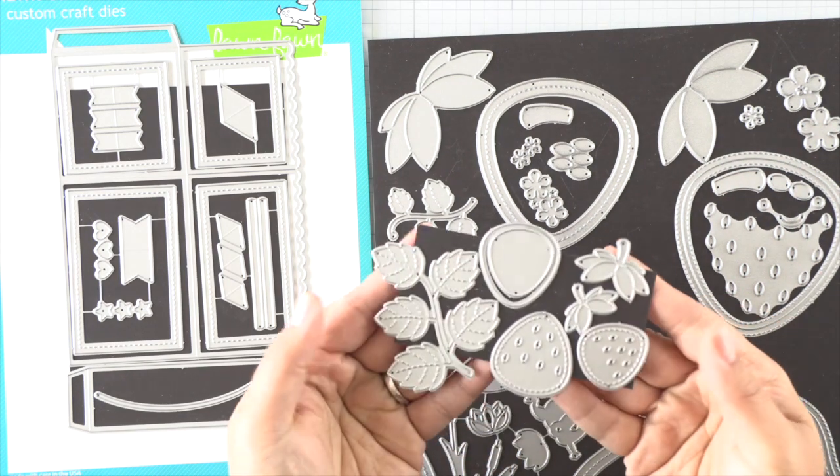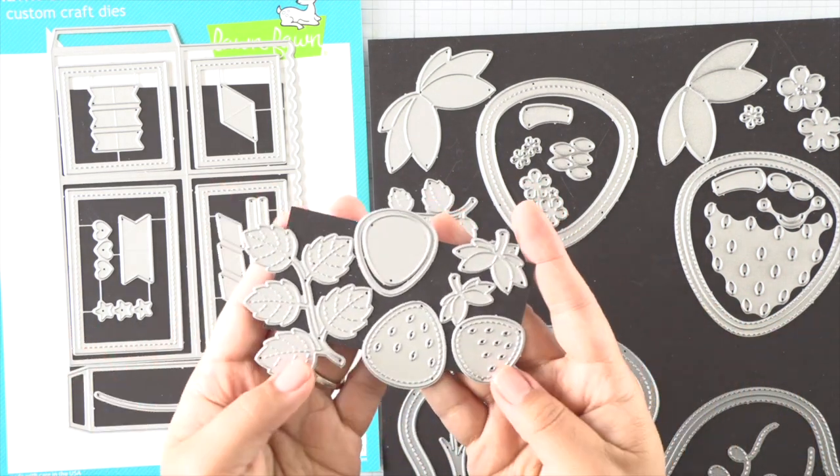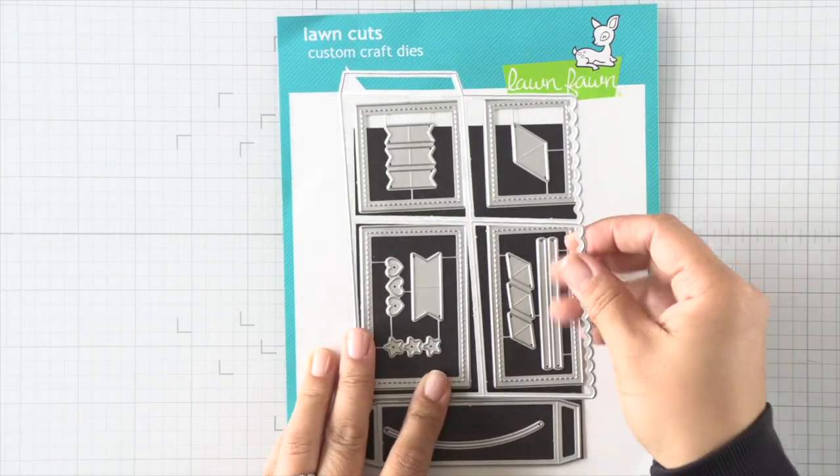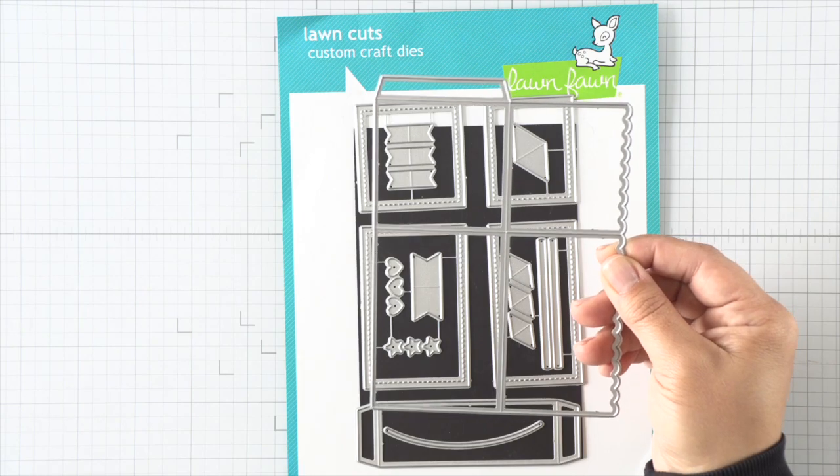I'll be using some foliage and flowers from the Outside In Stitched Strawberry as well as the Stitched Strawberry Frame dies, and the majority of the strawberry images are gonna be from the Strawberry Patch dies.